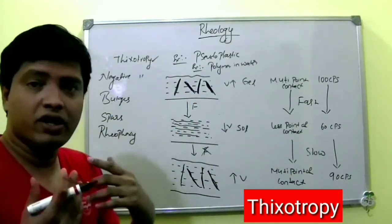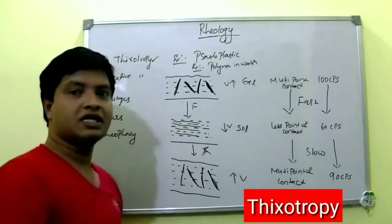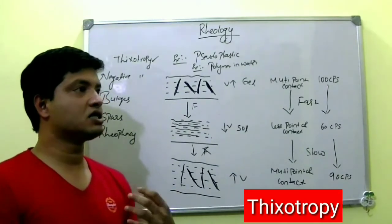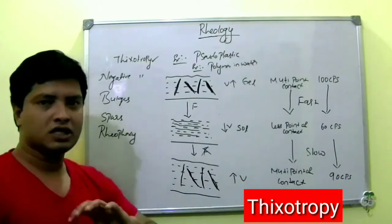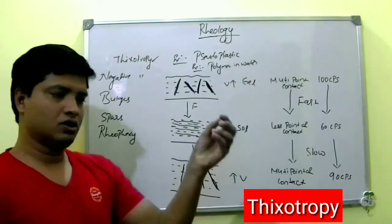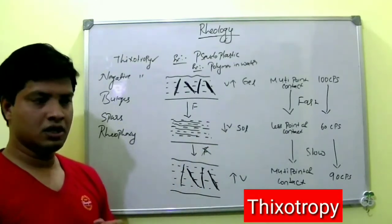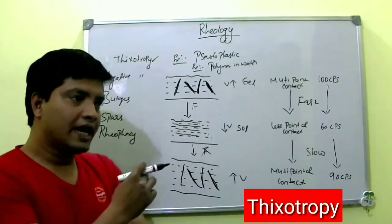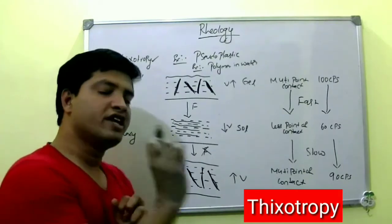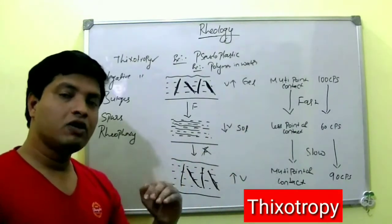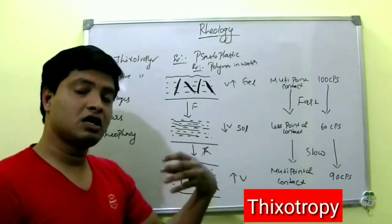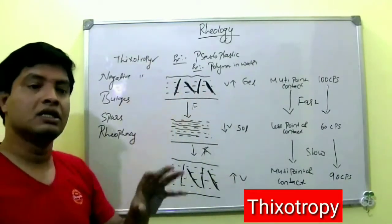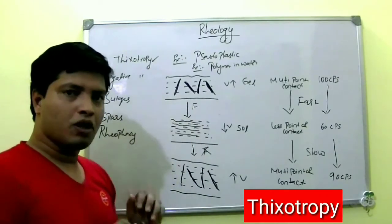Thixotropy has many applications in pharmacy. For example, if you want to formulate a sustained release injection: you dissolve the drug in water to make a solution. If you give this solution as an injection, the drug goes to the blood very readily and acts very fast. But if you want sustained release, you incorporate polymers in the injection.